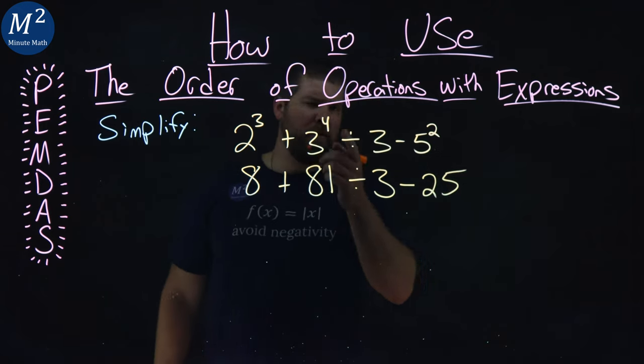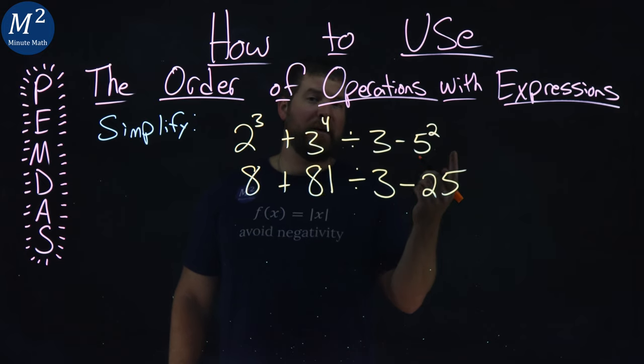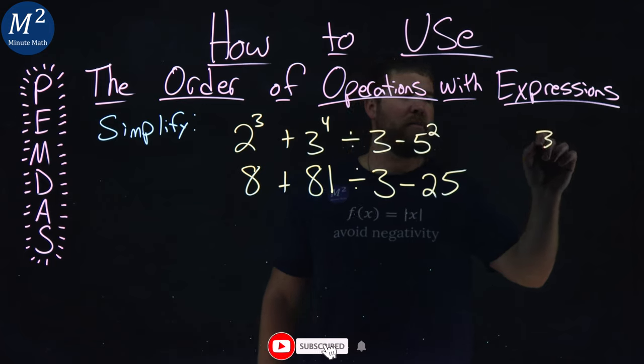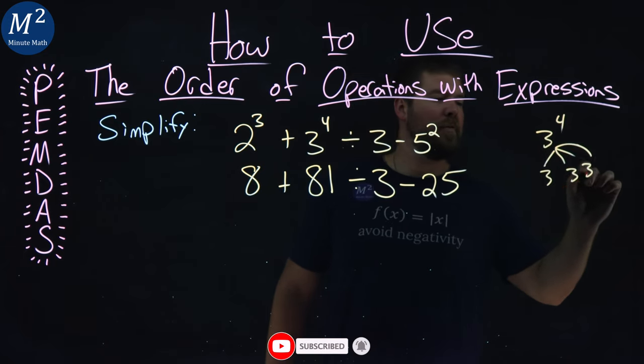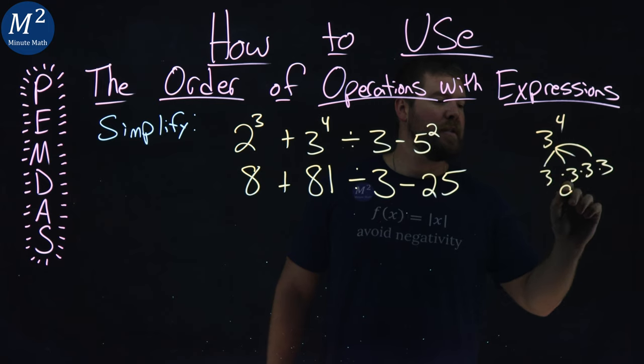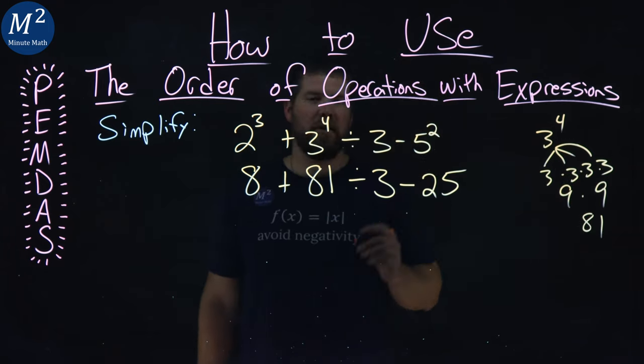Quick way to get 81 if you don't know. 3 times 3 is a 9, and then we have 3 times 3 again, which is a 9. So if you want to see that, 3 to the fourth is 3 times 3 times 3 times 3, which is 9 times 9. 81. Quick ways to do that, just so you can see that.